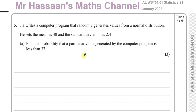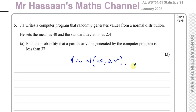The question says: Gia writes a computer program that randomly generates values from a normal distribution. He sets the mean as 40 and the standard deviation as 2.4. Find the probability that a particular value generated by the computer program is less than 37. So his values are normally distributed with a mean of 40 and a variance of 2.4 squared. For part A, we want to find the probability that the value generated is less than 37.